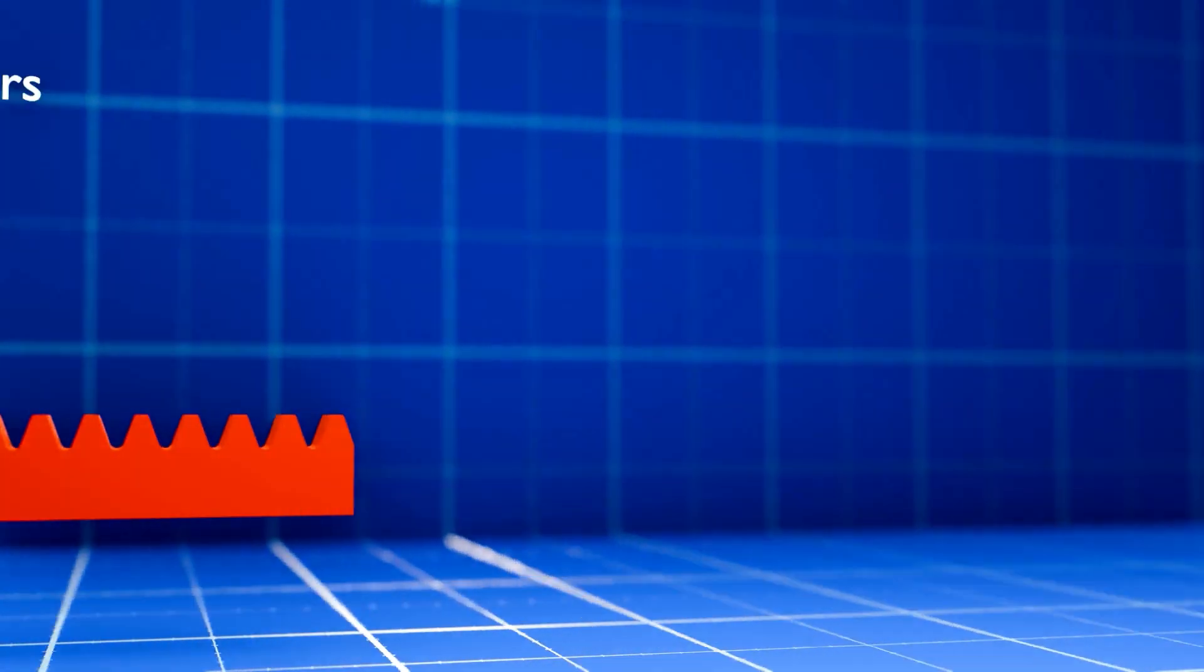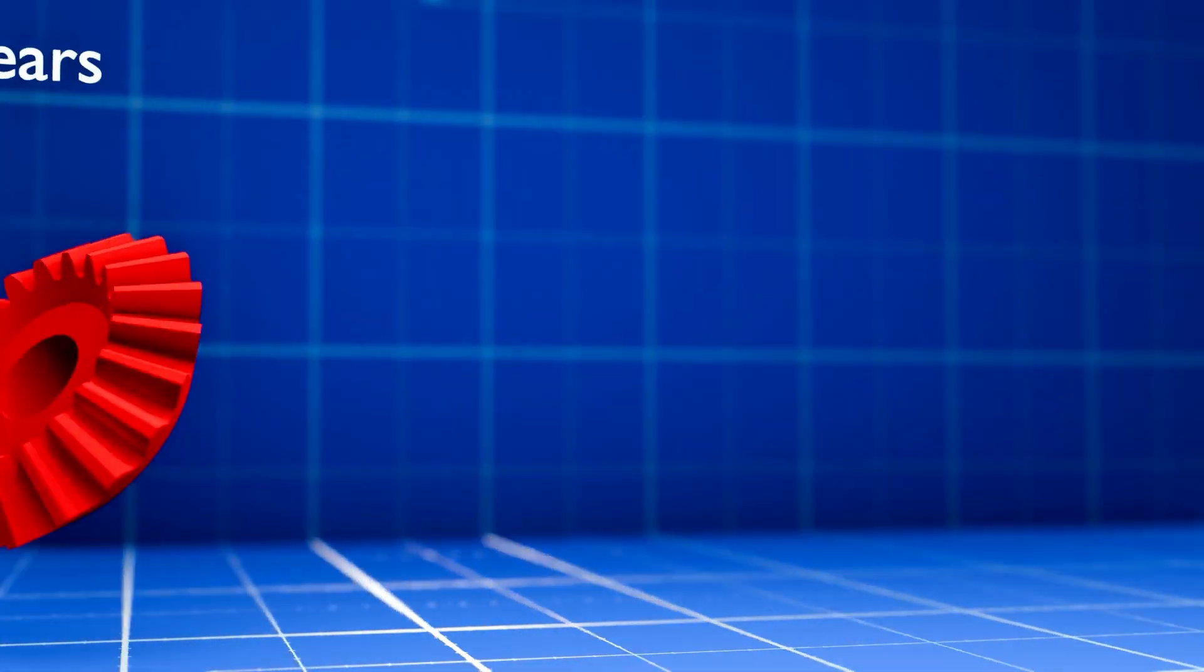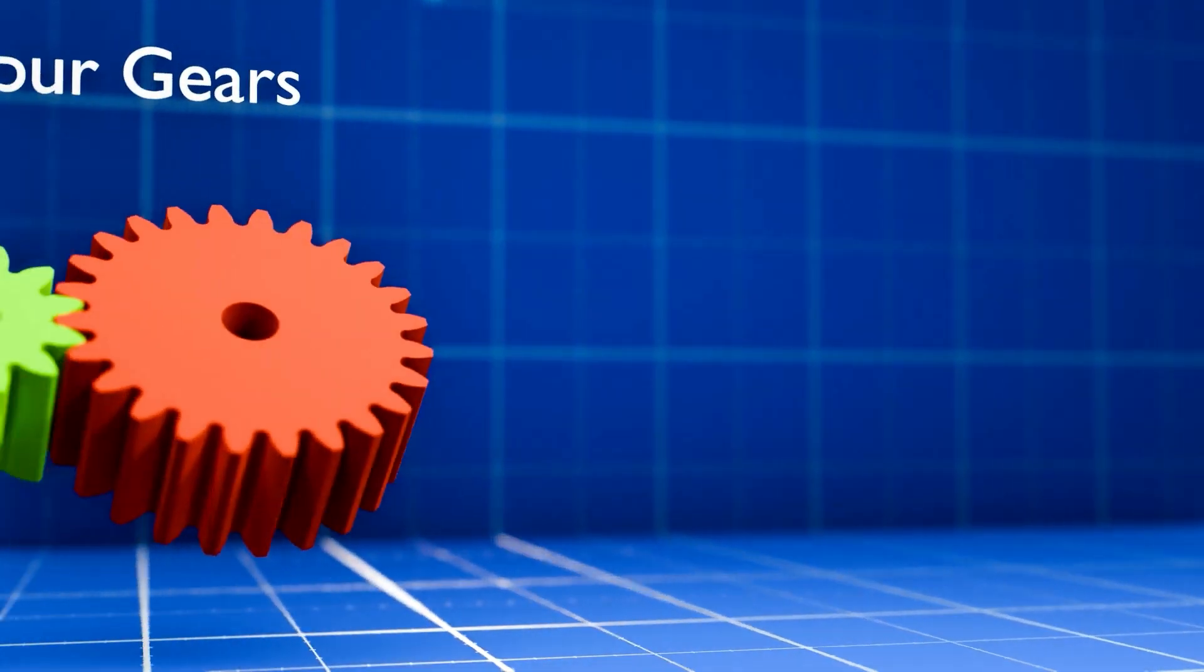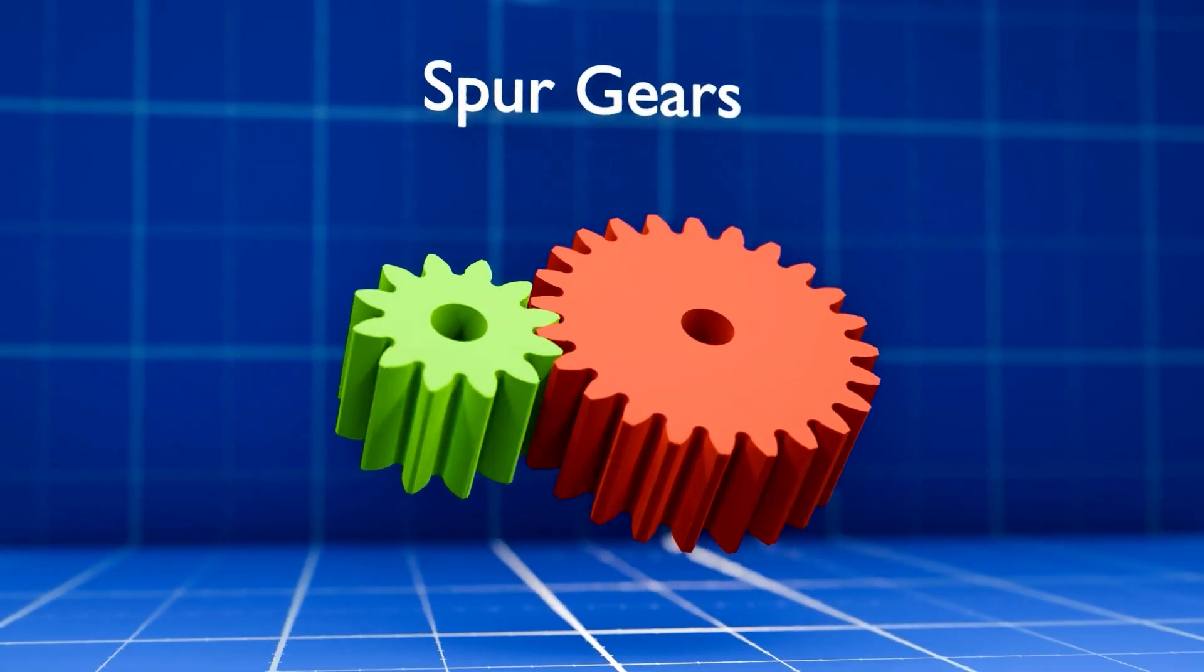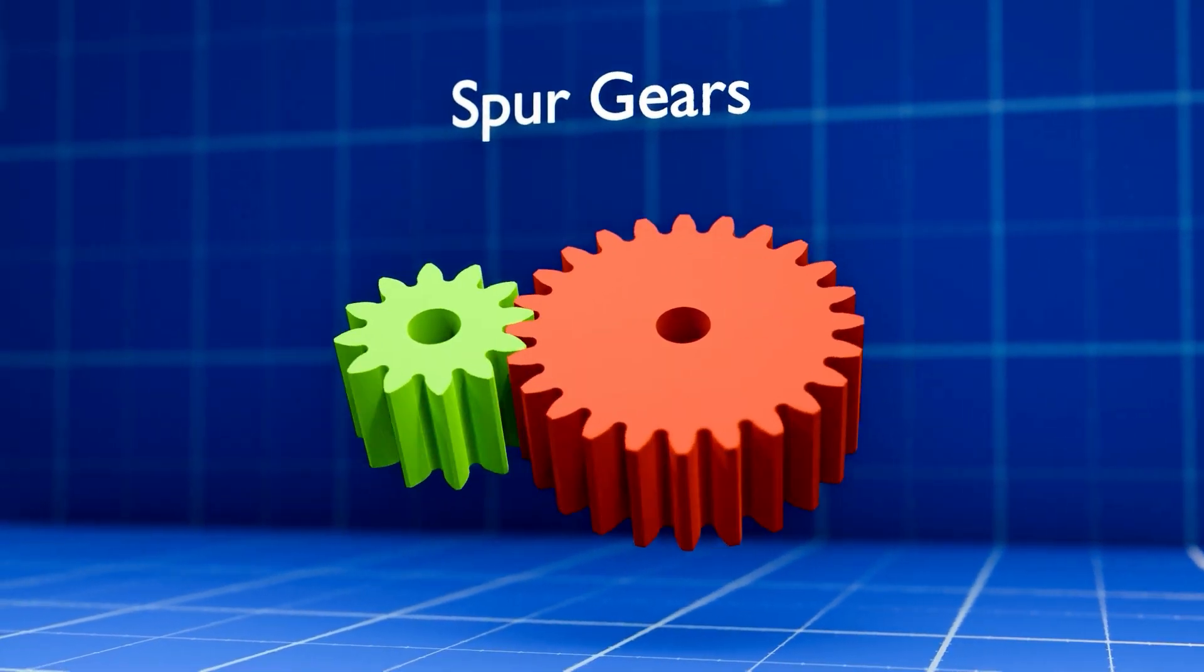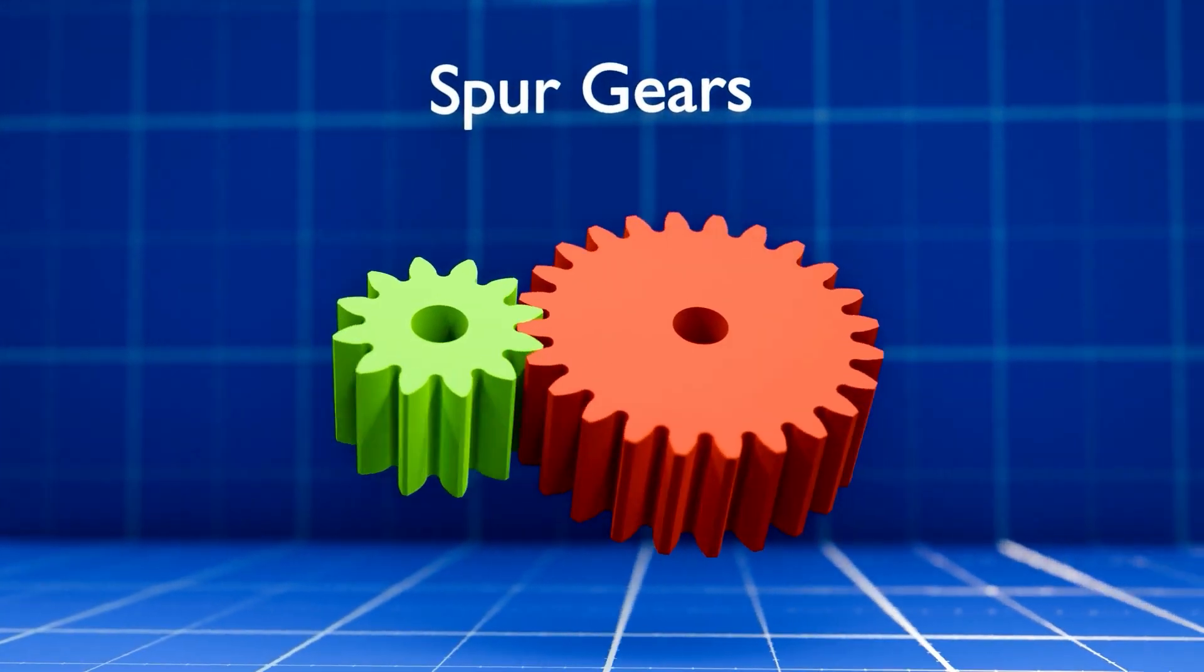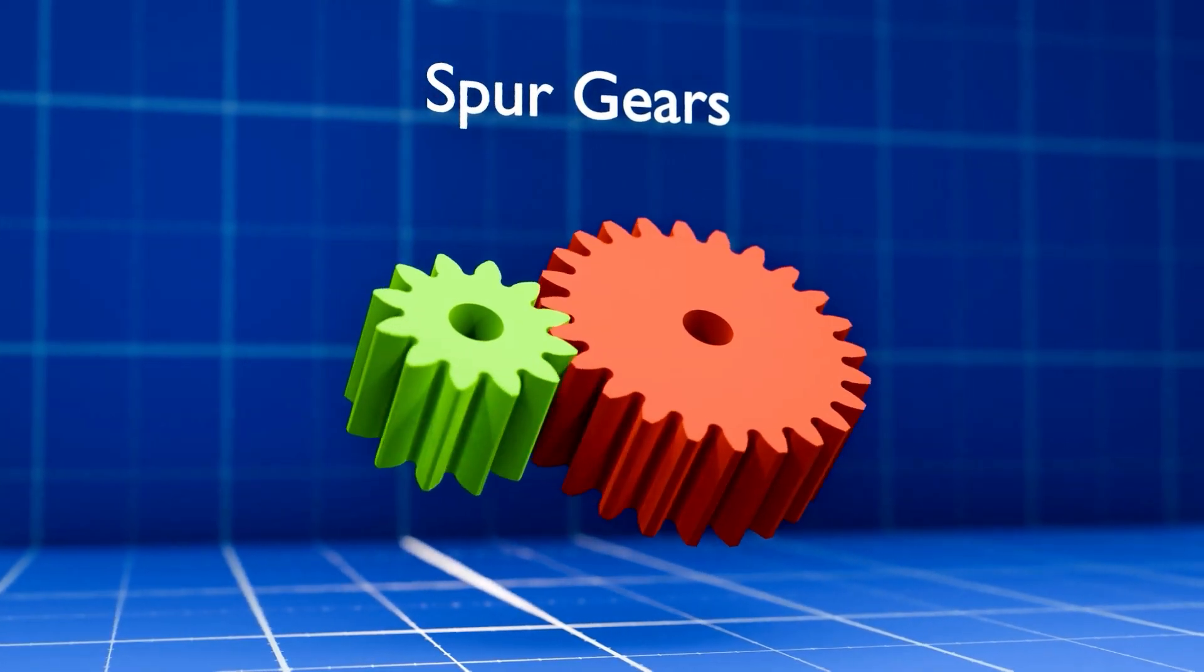Not all gears look or function exactly the same. The type of gear used depends on the specific task it needs to perform, such as how the shafts are oriented or how much force is required. The most common and basic type of gear is called a spur gear. These gears have straight teeth and are used when two shafts need to spin parallel to each other. They are efficient and easy to make, but they can be noisy because all the teeth connect at once, which creates a jarring sound. This limits their use in high-speed applications.